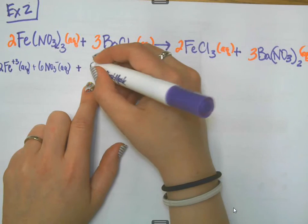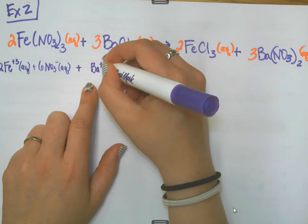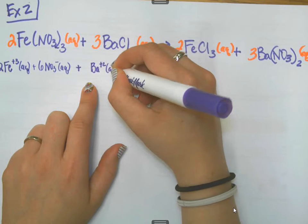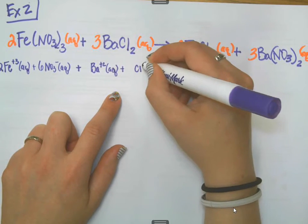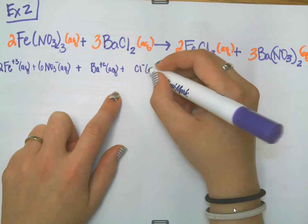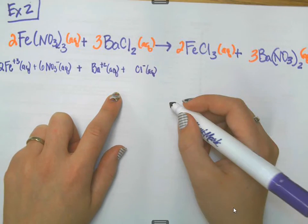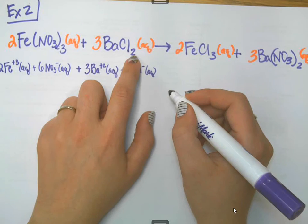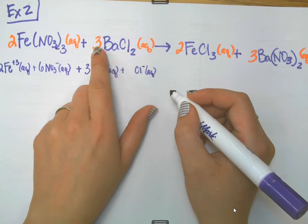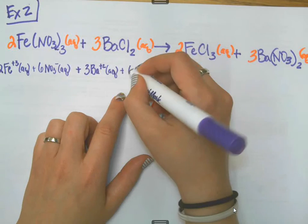Barium and chloride, that will break up into barium ions, which will be aqueous. And, it will also make chloride ions, which will also be aqueous. And, then I'm going to work with the numbers. There's three of those. There's two chlorines for every group, and there's three of those. So, that will make six chloride ions.